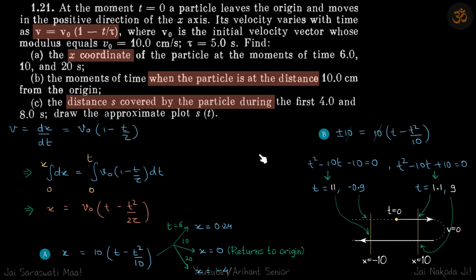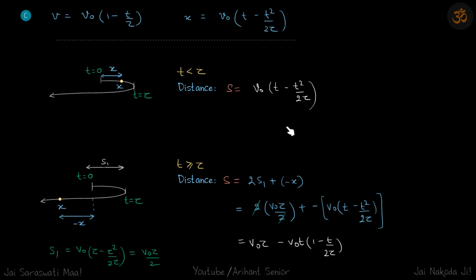Now the third part: distance covered during the given time. Let's find it in general. We are given this equation, and this we derived. Now, distance covered in a given time—we saw that at tau time the particle stops, as given in the question. So up to t equals 0 to t equals tau, distance and displacement are the same.